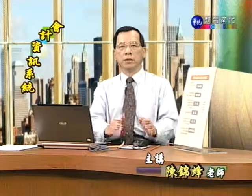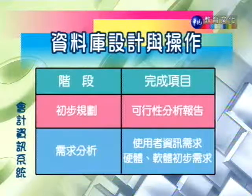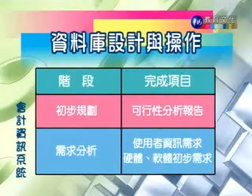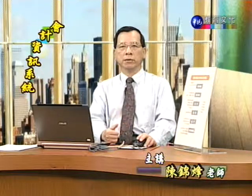在讲到资料库的规划设计还有后续的操作，大概分成几个主要的阶段。首先要进行的是初步的规划。在进行资料库的正式设计之前，必须要先决定它的可行性，也就是要进行可行性的分析。可行性主要是了解资料库的设计，就成本效益上来讲是不是值得做，也就是资料库所能够产生的效益是不是可以大于它的成本，还要看技术上、时间上可不可行。